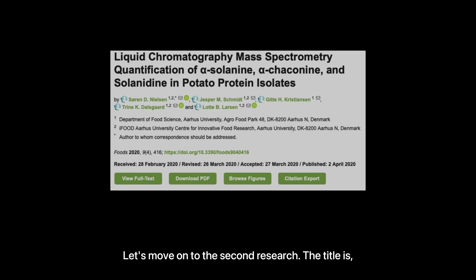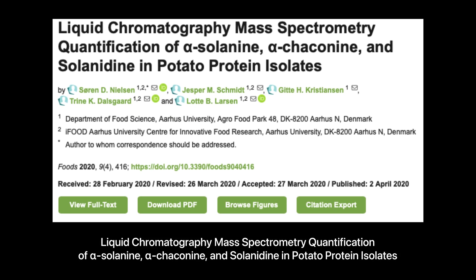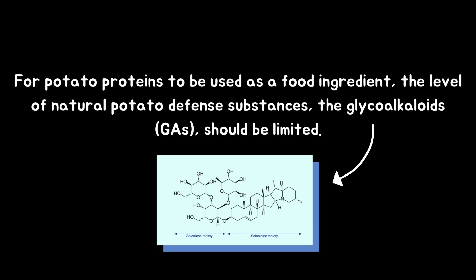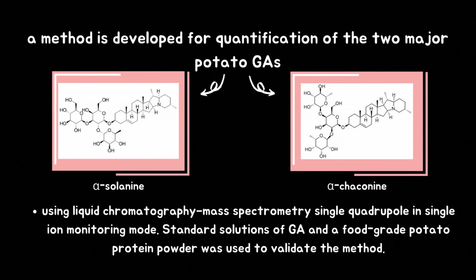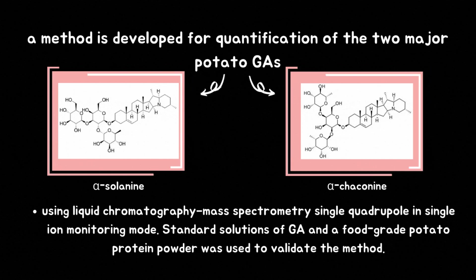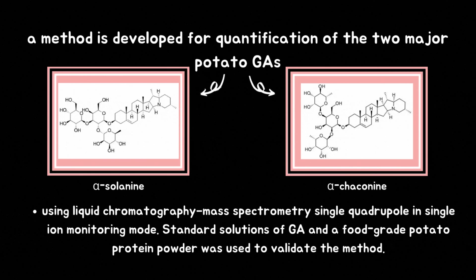Let's move on to the second research. The title is 'Liquid Chromatography–Mass Spectrometry Quantification of Alpha-Solanine, Alpha-Chaconine, and Solanidine in Potato Protein Isolates.' For potato proteins to be used as a food ingredient, the level of natural potato defense substances — the glycoalkaloids — should be limited. In this work, a method is developed for quantification of the two major potato glycoalkaloids, alpha-solanine and alpha-chaconine, as well as their aglycone form solanidine, using liquid chromatography–mass spectrometry single quadrupole in single ion monitoring mode.